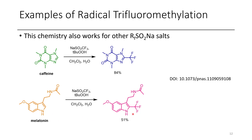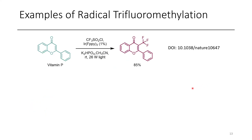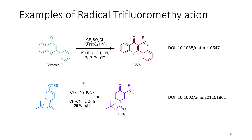They also showed that melatonin can be converted into a 2-trifluoromethyl melatonin derivative, and a link to that article is provided. In another paper from the MacMillan group, vitamin P was converted into a trifluoromethyl derivative — a chalcone. Additionally, a CF3 radical can be generated from trifluoromethyl iodide, which then adds into a silyl enol ether under photochemical conditions.